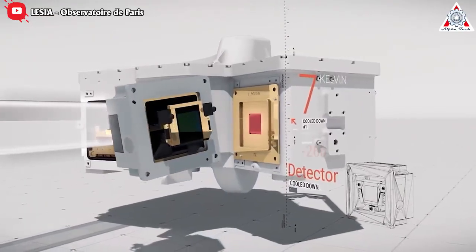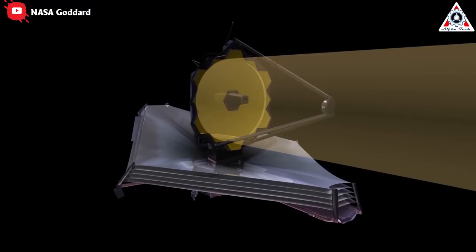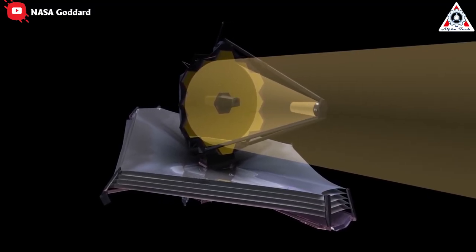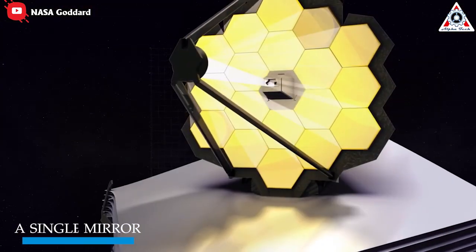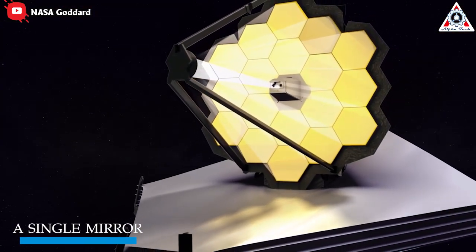The whole process is expected to take approximately three months, after which the JWST's 18 primary mirror segments should work together as a single mirror and deliver the data scientists have been waiting years for.